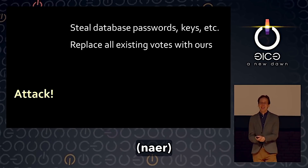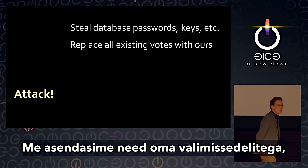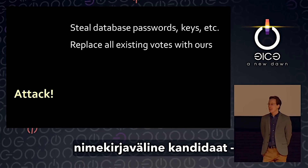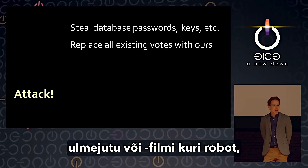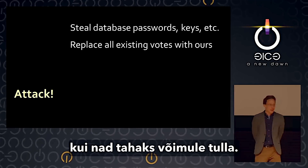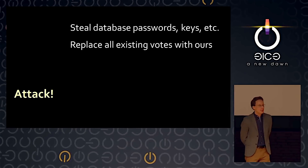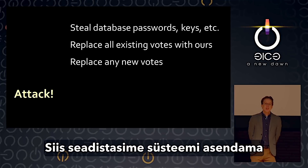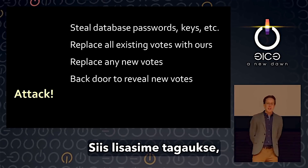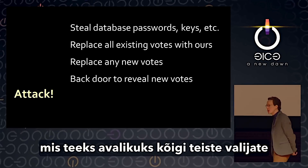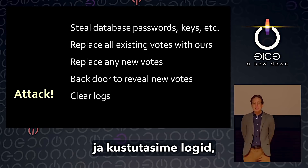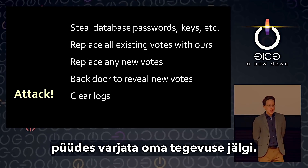We replaced the votes with our own ballot where each candidate was a write-in from sci-fi — an evil robot or AI from the movies. We rigged the system to replace any new votes with votes of our choosing. We added a backdoor that would reveal the secret ballots of anyone else who voted, and we cleared the logs to try to hide all the traces.